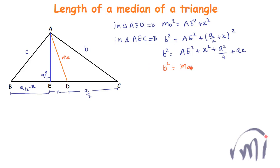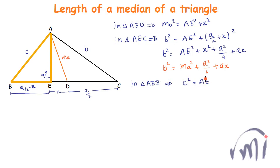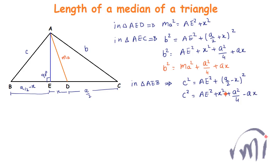From the earlier result, AE² plus x² equals Ma², so b² can be written as Ma² plus a²/4 plus ax. In triangle AEB, this is also a right-angle triangle, and c² equals AE² plus BE². BE is equal to a/2 minus x, so c² equals AE² plus x² plus a²/4 minus ax, and again AE² plus x² equals Ma², so c² equals Ma² plus a²/4 minus ax.